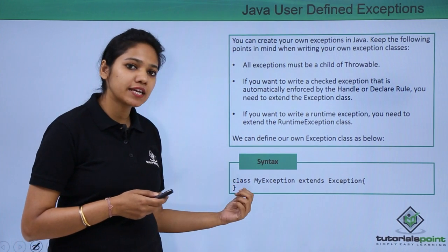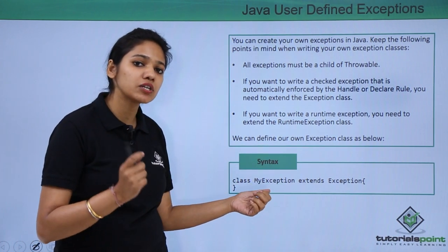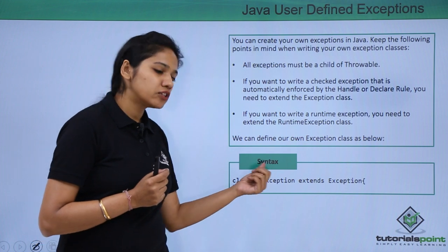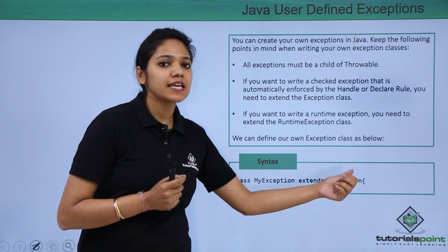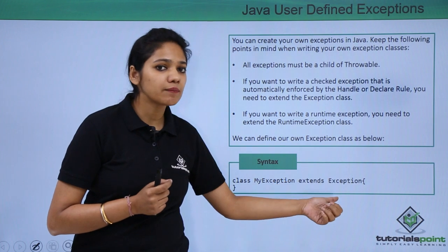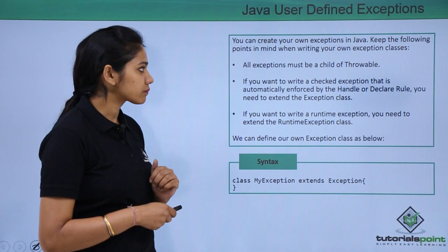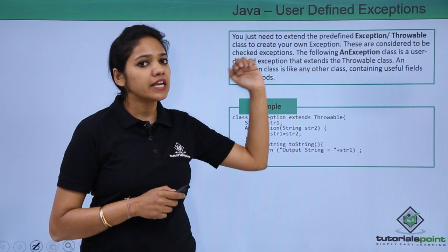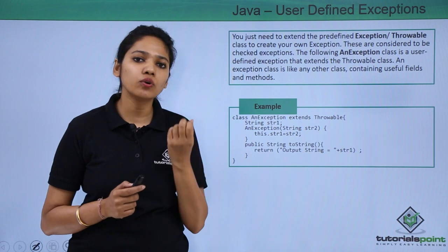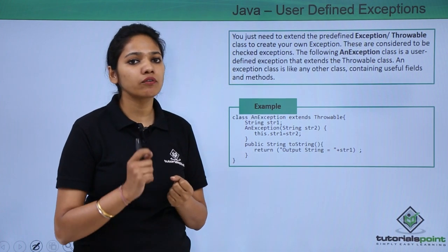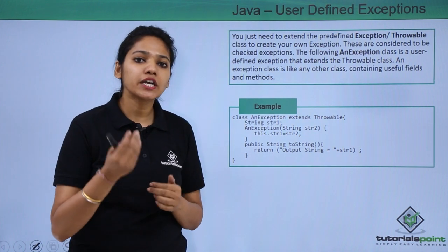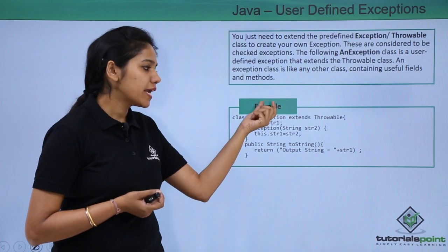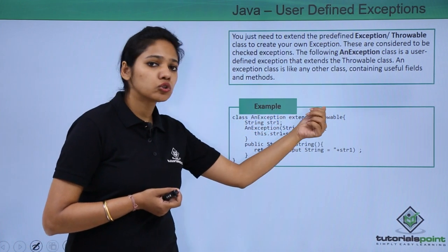First, how do you declare or create an exception? With the class keyword — so it itself acts as a class. You use the class keyword, your exception name, which will extend Exception, Throwable, or RuntimeException. Here we have created an exception named AnException, which extends the Throwable class.